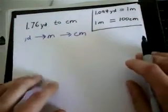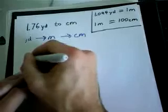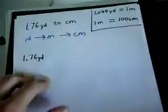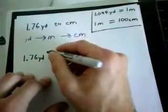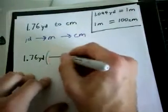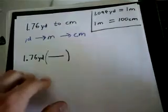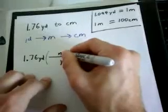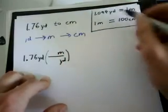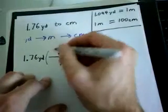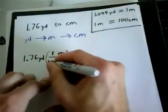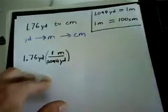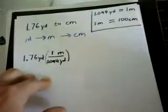So let's do it. We have 1.76 yards, and so right now what I'm going to do is I'm going to set up the conversion factor. Our yards are going to be on the bottom and our meters are going to be on top, and using the equivalent relationship between the two, it says that one meter is equal to 1.094 yards. But we're not done yet, right? Because we still have to convert to centimeters.